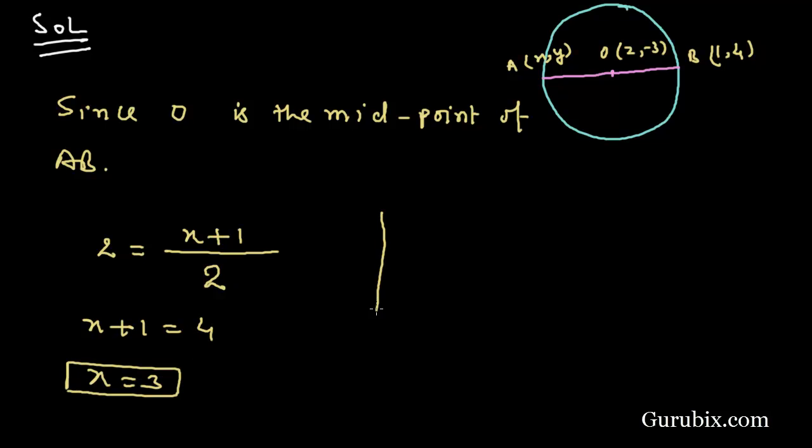Similarly, -3, the Y coordinate of the center O, equals (Y + 4)/2. This means Y + 4 equals -6, so Y equals -10.